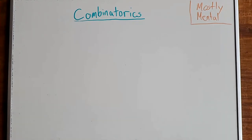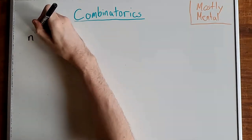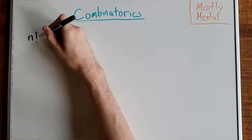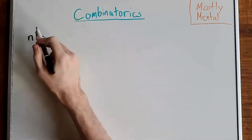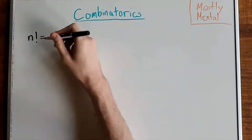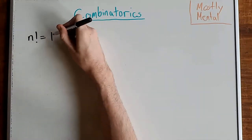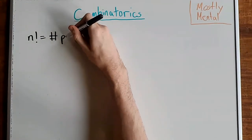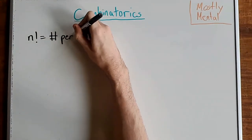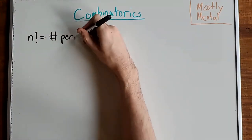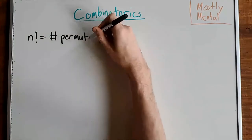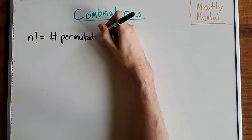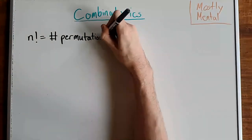To start with, we'll need to define some terms. First, n factorial, which we write like this with an exclamation point, is the number of ways to arrange n things in order — that is, the number of permutations.